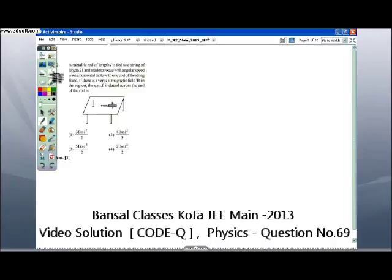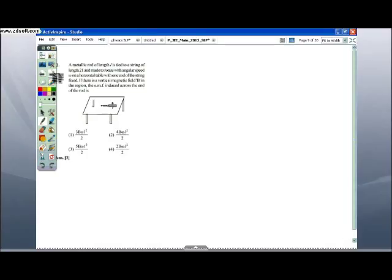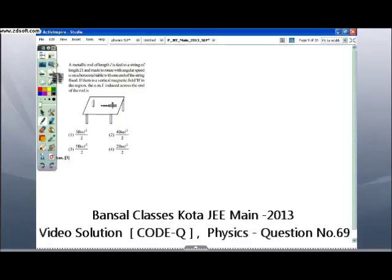The next question: A metallic rod of length L is tied to a string of length 2L and made to rotate with angular speed omega on a horizontal table with one end of the string fixed. If there is a vertical magnetic field B, the EMF induced across the ends of the rod is... Redrawing the figure, let this be the string with length 2L and this will be the rod with length L. We are viewing the top view. The system will be rotating with angular speed omega. We are interested to find the EMF developed in the rod between points A and B.